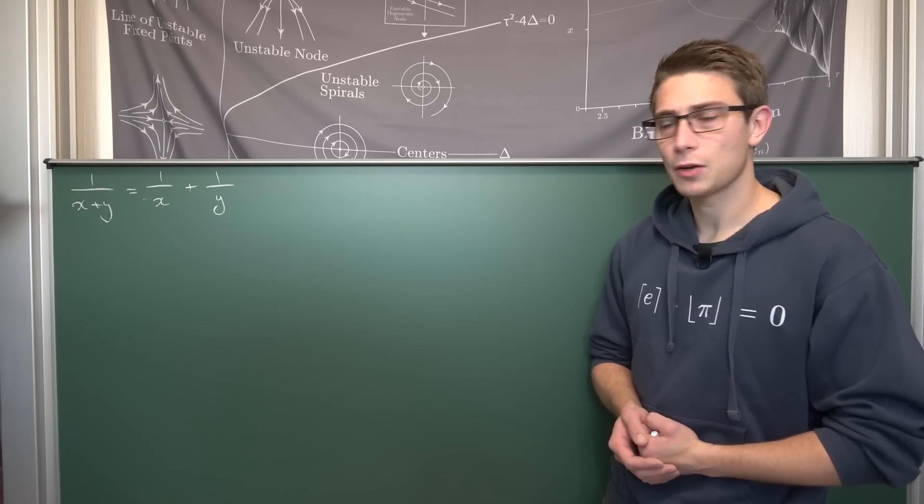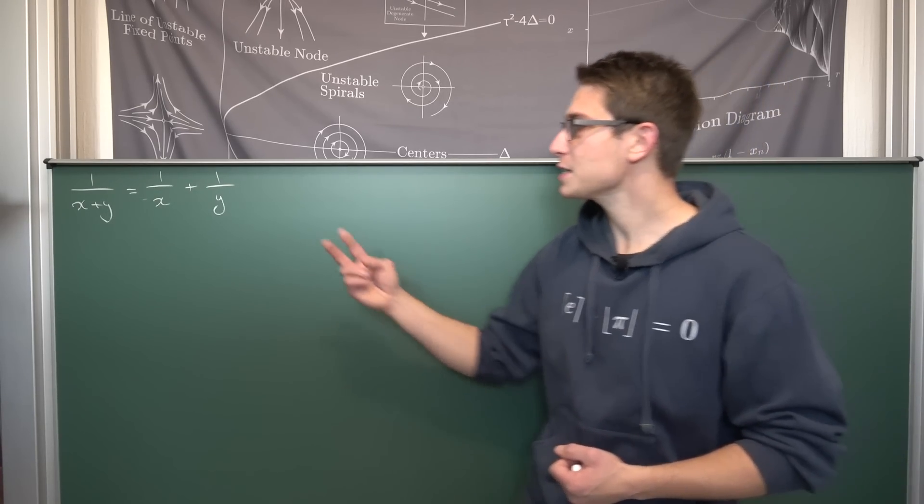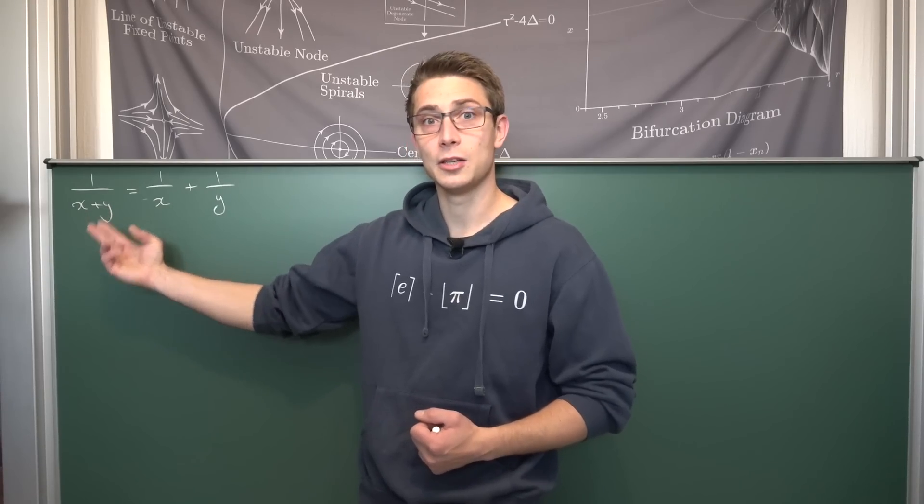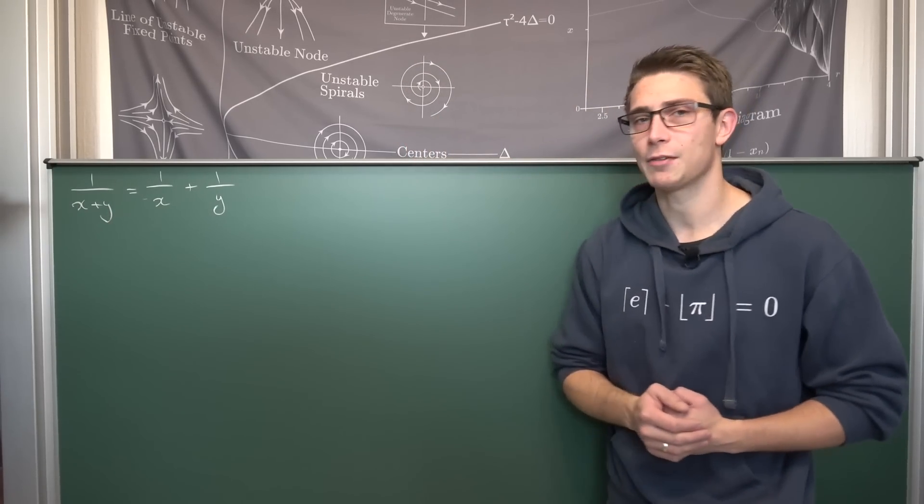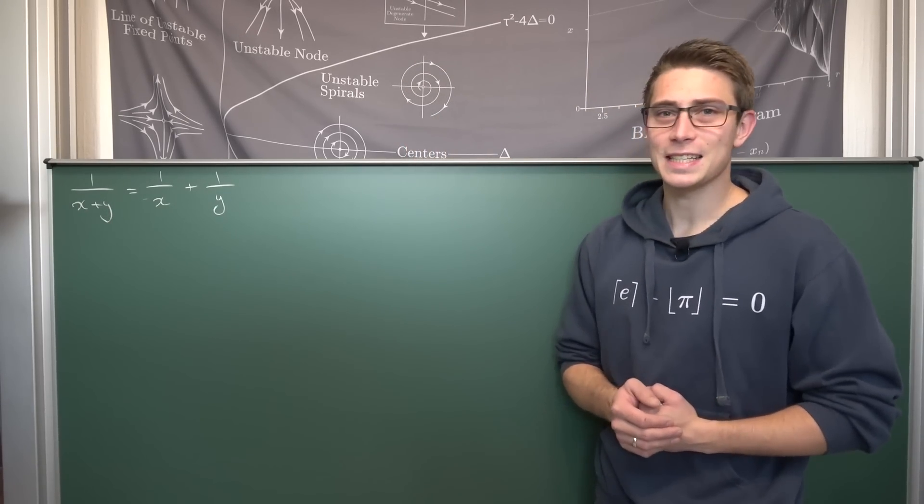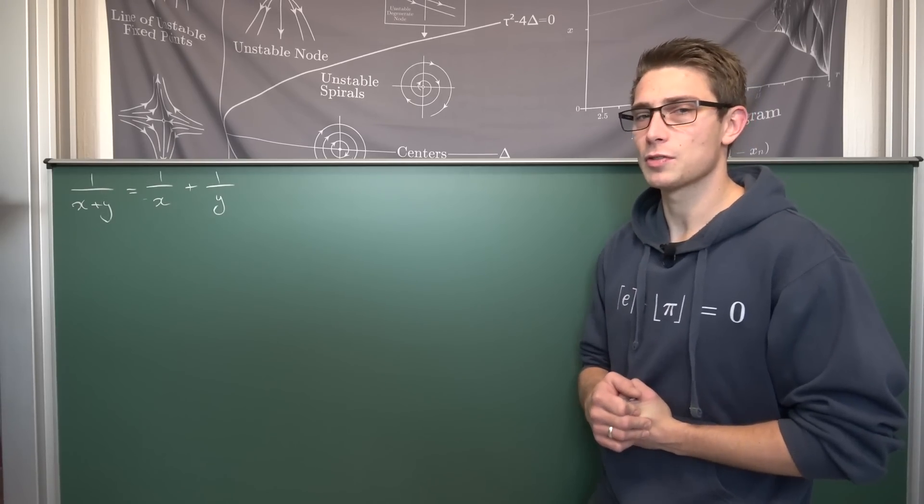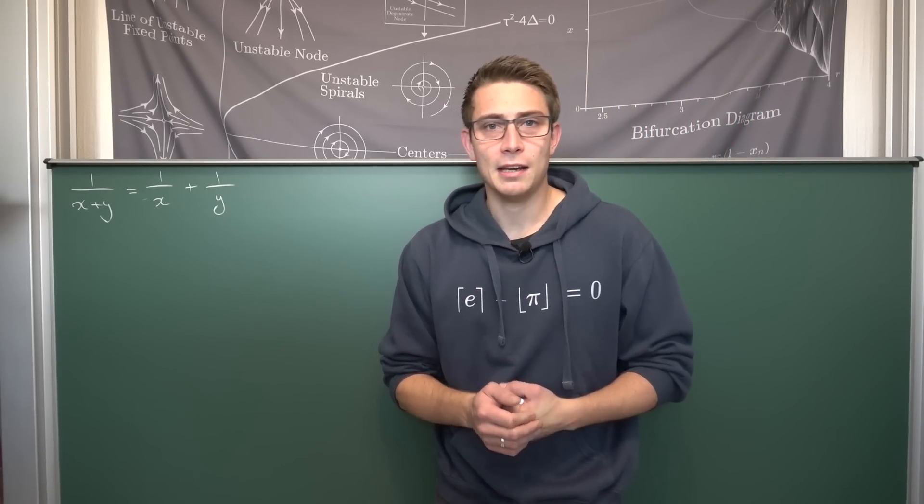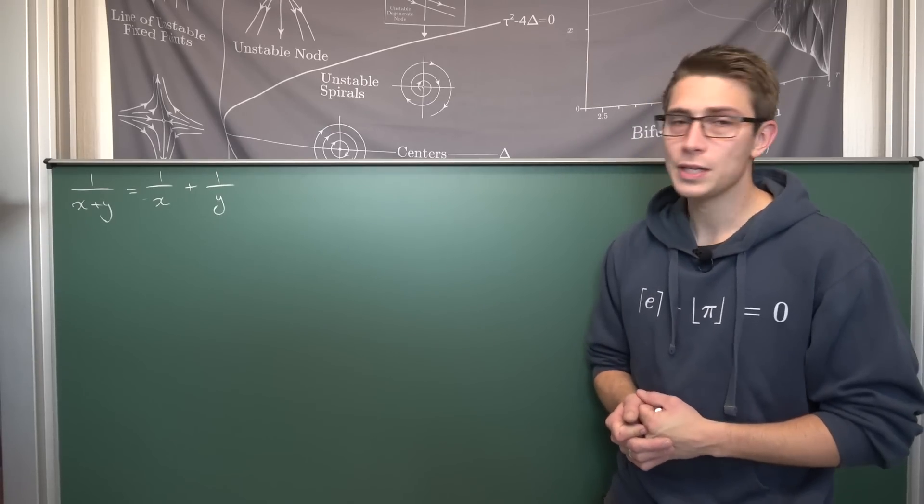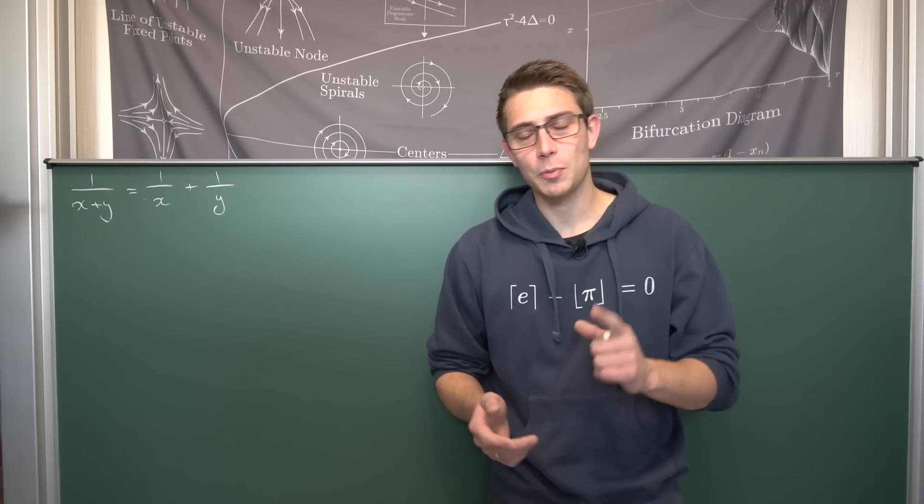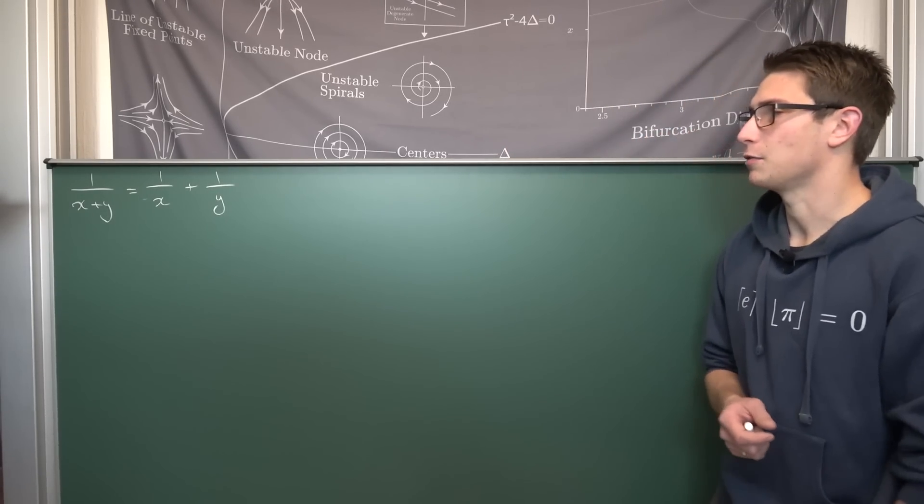But this time we are going to add a little twist to it. Namely, what we are going to do is we are going to make the false assumption that we can just add the denominators together if we were to add fractions together. Yeah, this is a very false assumption that a lot of students actually do and we want to see if there are any solutions to it. Maybe there are real solutions to it. We are going to see it. And I hope you are going to enjoy the video and now we are going to dive right in.